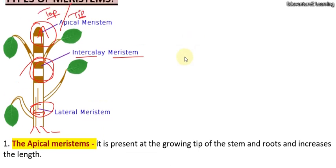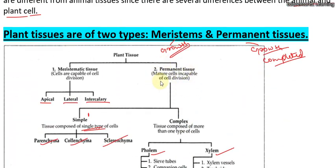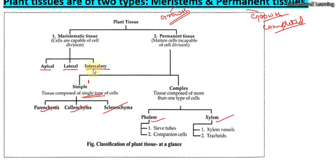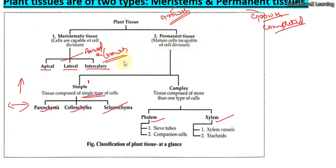In the next video, we will discuss the permanent tissues — the simple and complex parts. I hope the three types of meristematic tissue — apical, lateral, and intercalary — are clear to you. These are all based on growth: lengthwise or widthwise. We will discuss permanent tissues in the next video. Till then, keep studying, keep watching the videos. If you like these videos, press like, share with your friends, and do subscribe to our channel. Thank you.